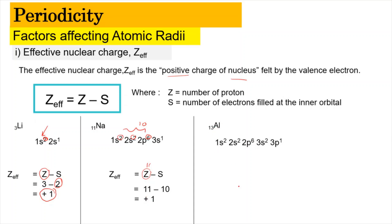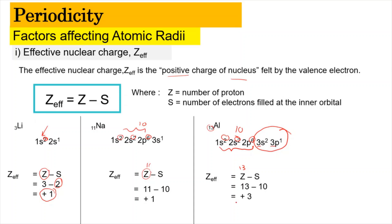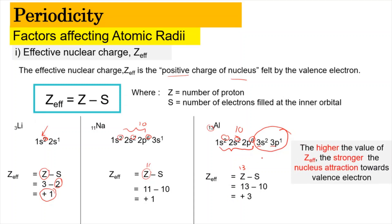Now let us look at aluminum. For aluminum, the proton number Z = 13. The outermost orbital is the one with the highest principal quantum number — the 3s and 3p electrons — so the inner orbitals contain 10 electrons altogether. Therefore Z_eff = 13 − 10 = +3. What we can conclude from this is that the higher the value of Z_eff, the stronger the nuclear attraction towards the valence electron. This is the first factor.